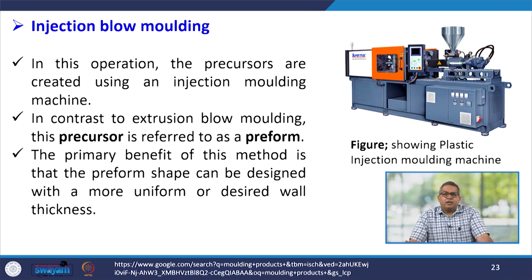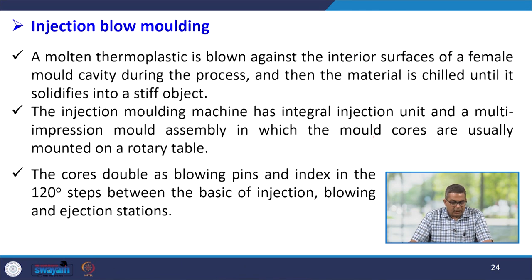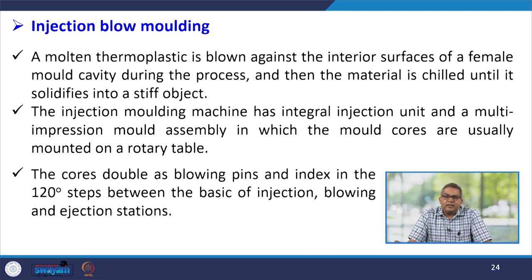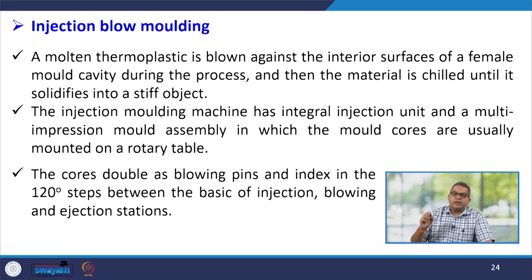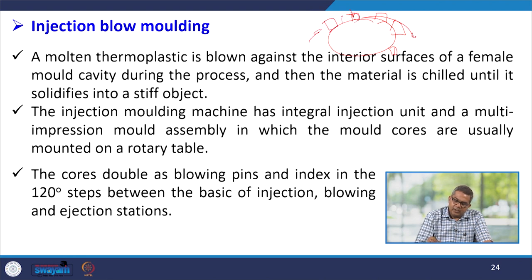In injection blow moulding, the precursors are created using injection moulding. The precursor is referred to as the preform, and the primary benefit is that the preform shape can be designed with more uniform or desired wall thickness. A molten thermoplast is blown against the interior surface of a female mould cavity and then chilled until it solidifies. The injection moulding machine has an integral injection unit and a multi-impression mould assembly where mould cores are usually mounted on a rotary table.